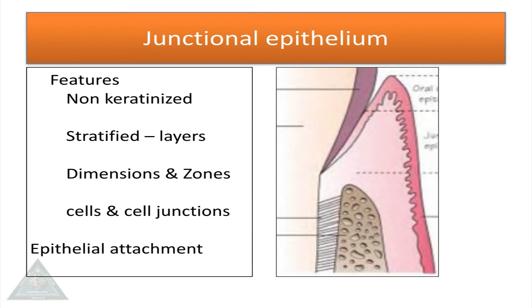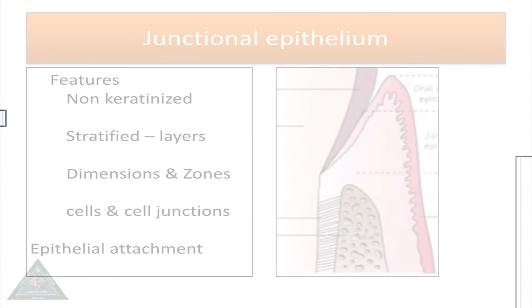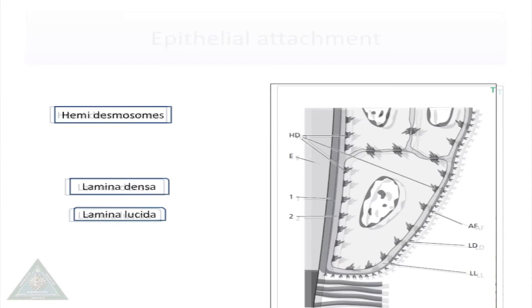Junctional epithelium gives attachment of gingiva to the tooth surface. It is four to ten layers thick, tapers from the coronal to the apical end, and has permeable junctions.